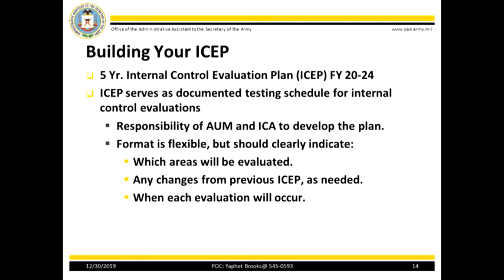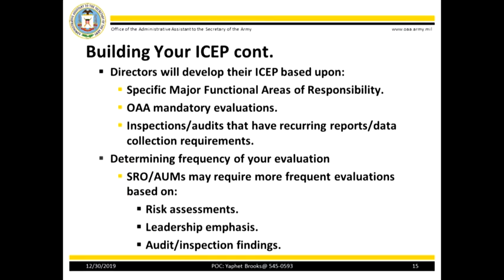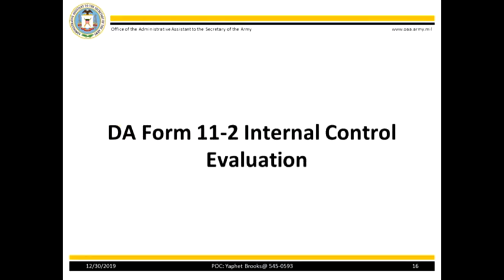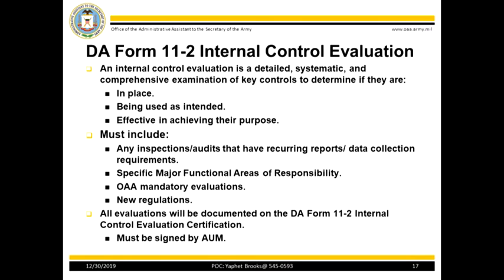This slide addresses OAA requirements for building your ISEP. Let's discuss the DA Form 11-2 Internal Control Evaluation. An Internal Control Evaluation is a detailed, systematic, and comprehensive examination of key controls to determine if they are in place, being used as intended, and effective in achieving their purpose. They must include any inspections, audits that have recurring reports, data collection requirements, specific major functional areas of responsibility, OAA mandatory evaluations, and new regulations. All evaluations will be documented on the DA Form 11-2 Internal Control Evaluation Certification, and it must be signed by your AUM.